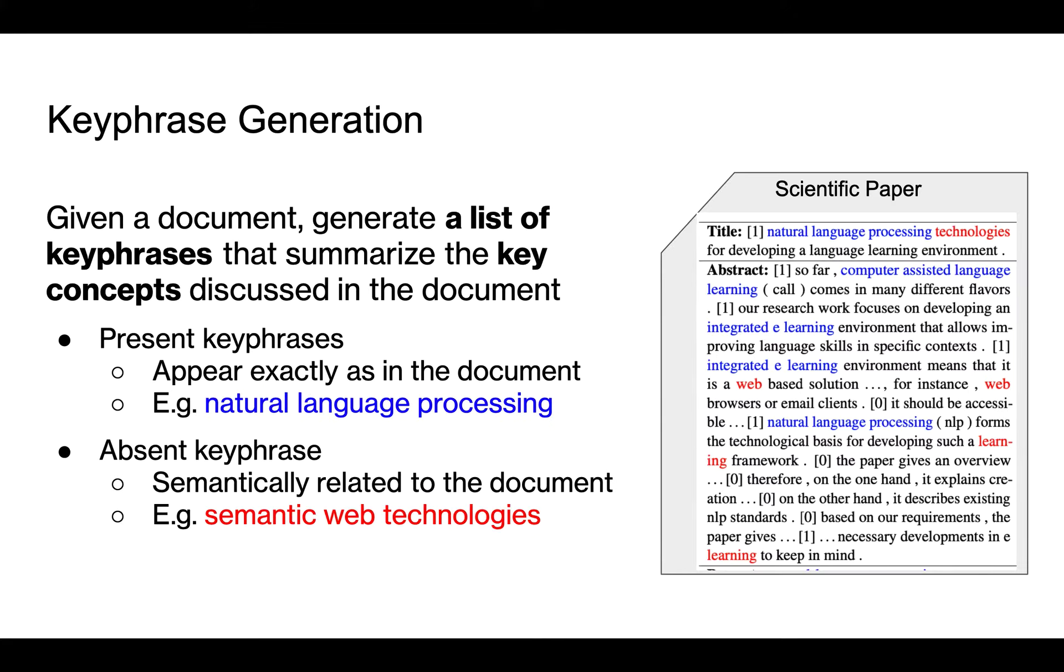Given a document, an automatic keyphrase generation task aims to generate a list of keyphrases that summarize the key concepts discussed in the document. A generated keyphrase can be categorized as present keyphrase if it appears exactly as in the document, such as natural language processing in this scientific paper example.